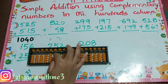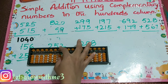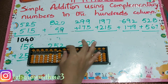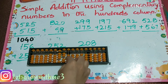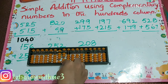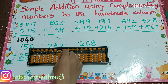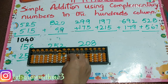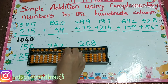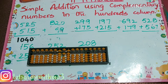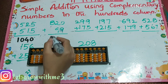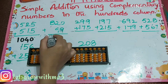Next problem: 820 plus 99. How to add 99? Plus 10 minus 1. And 1 plus 9 — you can add directly, you don't need to apply the formula. So your answer is 919.